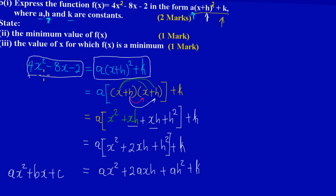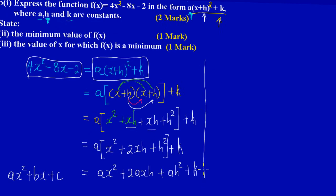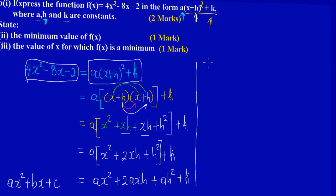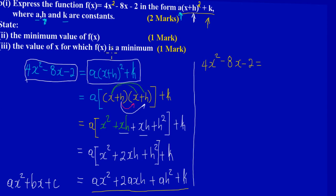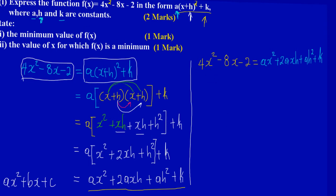A quadratic in completed-square form is really equivalent to the general form ax squared plus bx plus c — we've just written it another way. So by comparison, we have 4x squared minus 8x minus 2 on the left, and ax squared plus 2axh plus ah squared plus k on the right.